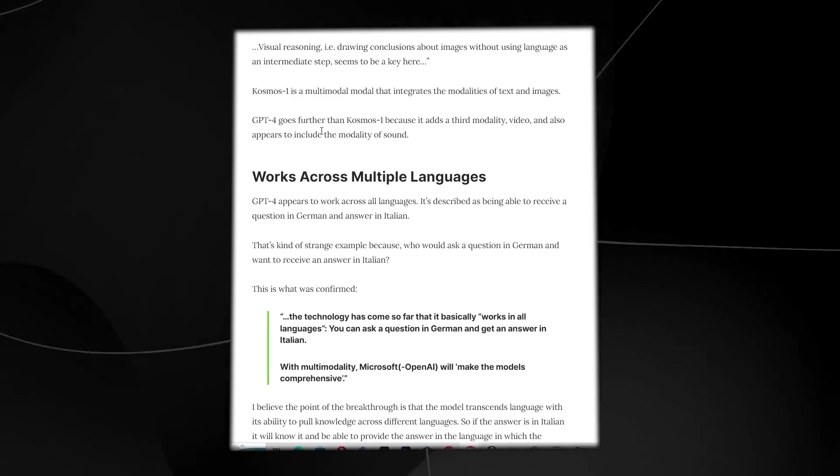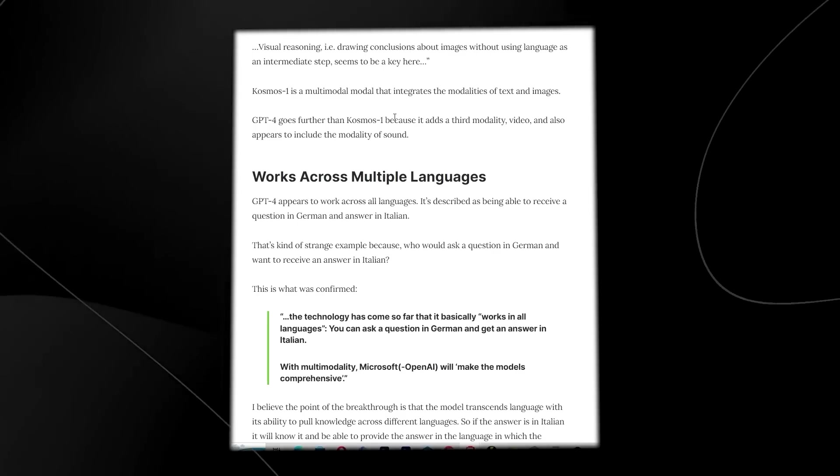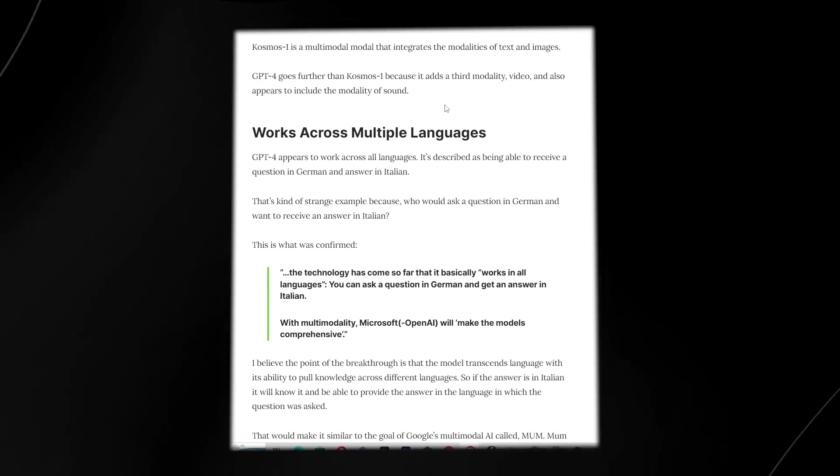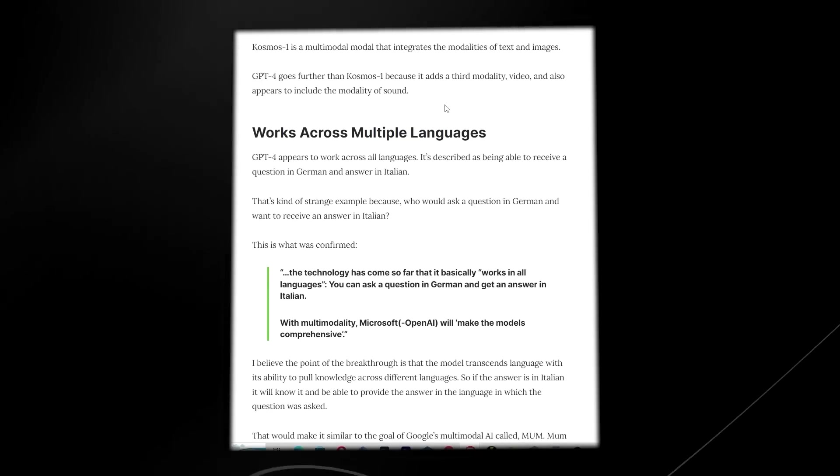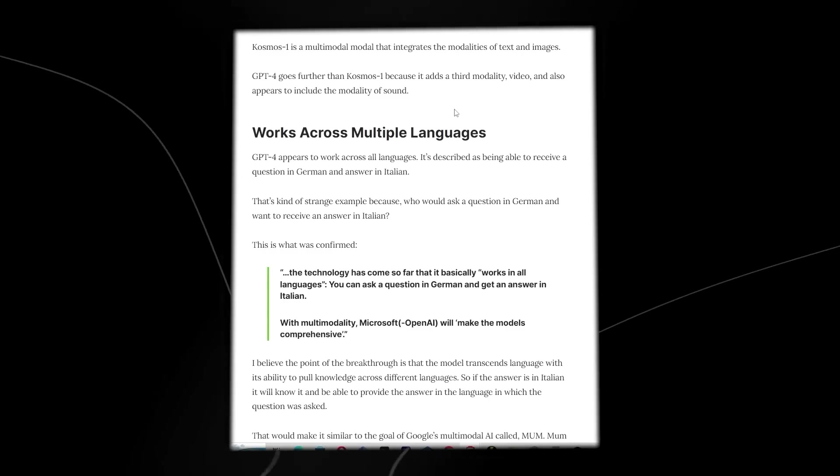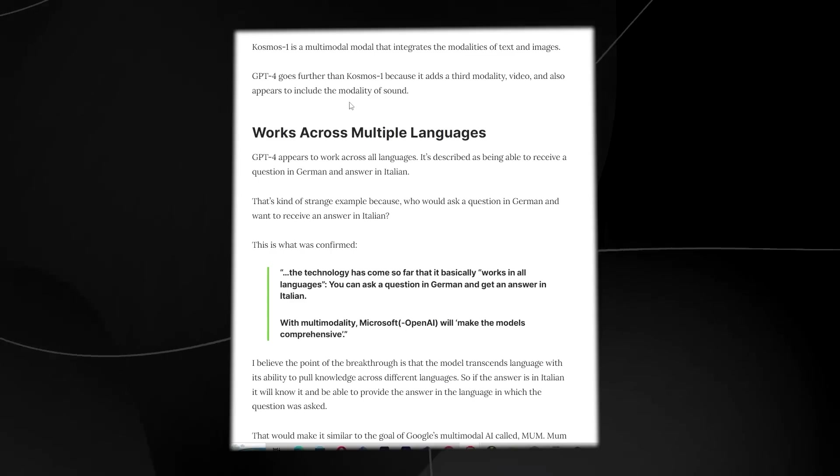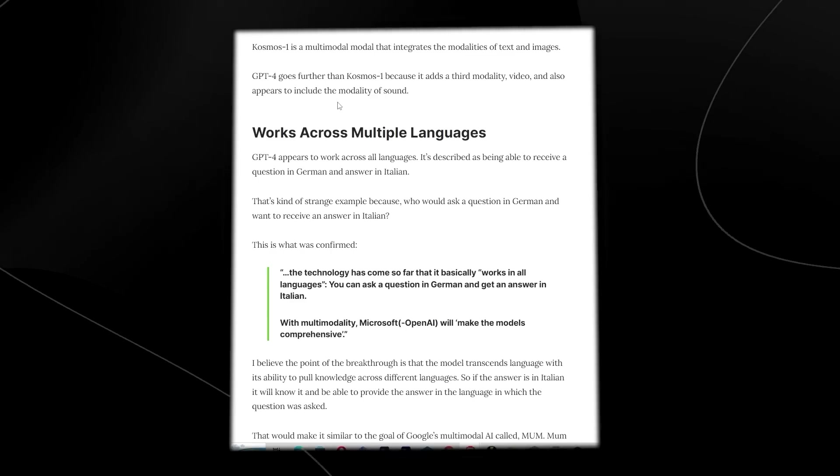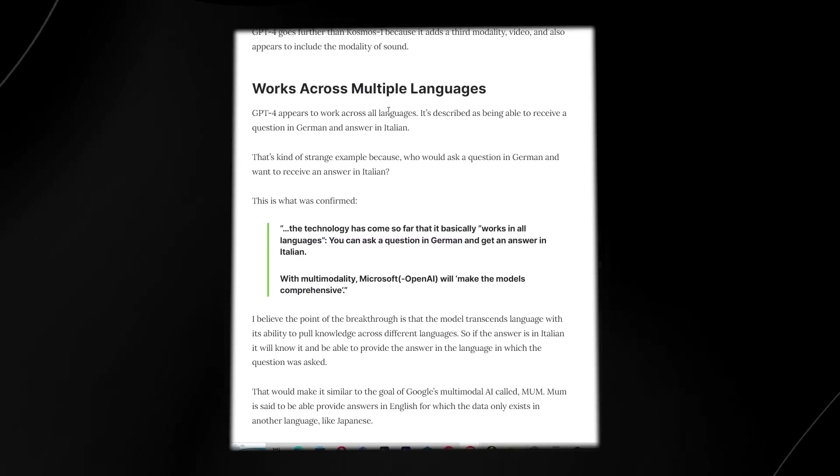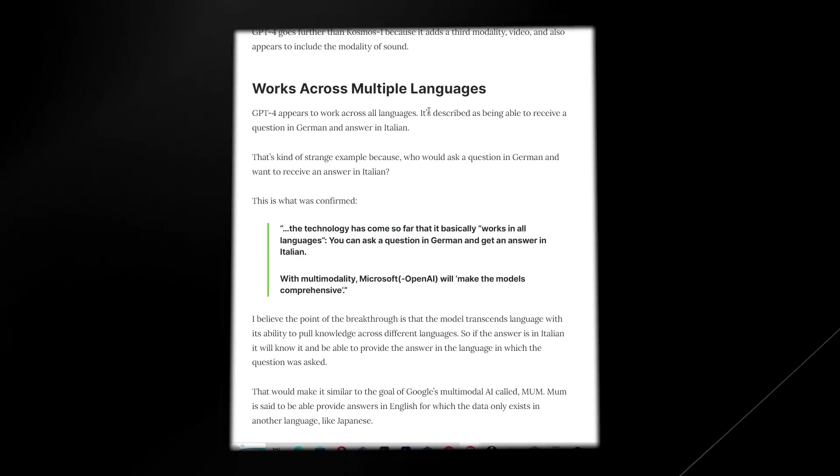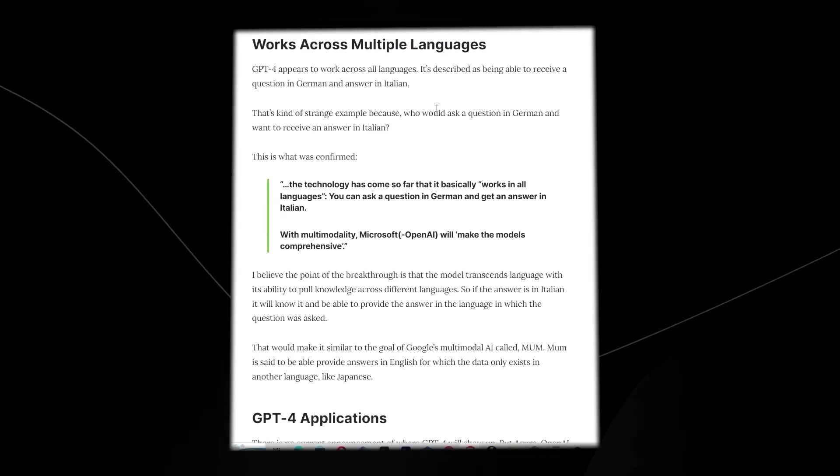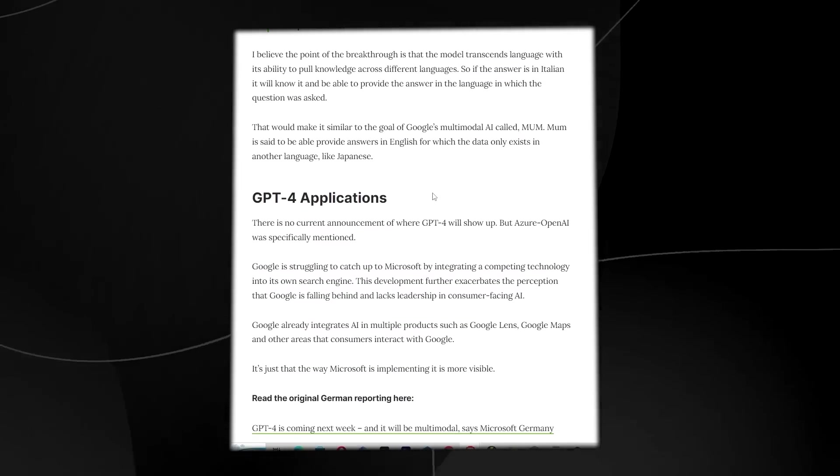And it says GPT-4 even goes further than Cosmos 1 because it adds a third modality video and appears to include the modality of sound. So this is going to be pretty insane. We're going to be getting many different versions of content from GPT. Is this going to be better than Mid Journey, better than Dali 2, better than Stable Diffusion? We have no idea. It also says that GPT-4 appears to work across all languages and it appears as being described as to be able to receive a question in German and answer in Italian.